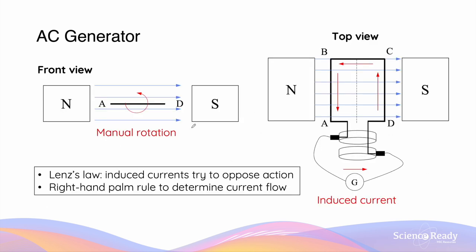The direction of current produced in a generator can be determined by applying Lenz's law. By way of review, Lenz's law states that the direction of an induced current will be such that the force produced will always oppose the changing flux, or the action that causes a changing flux.